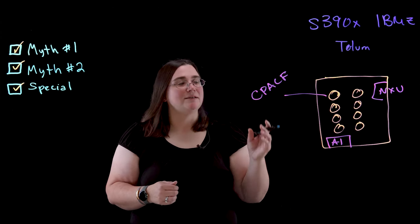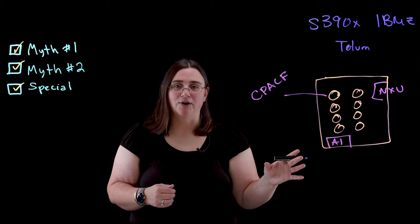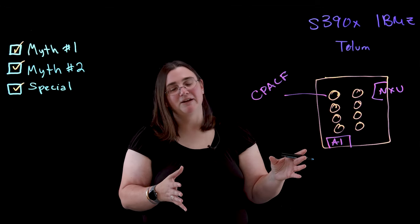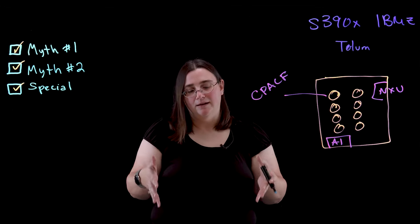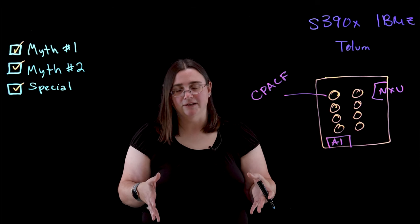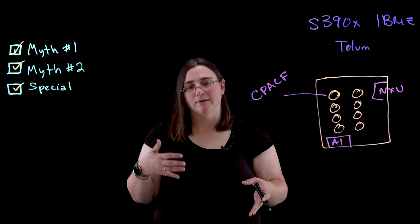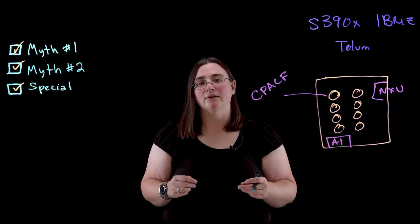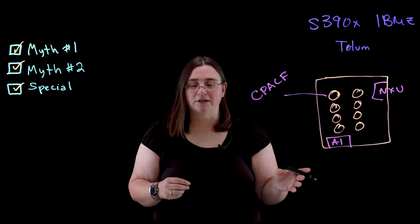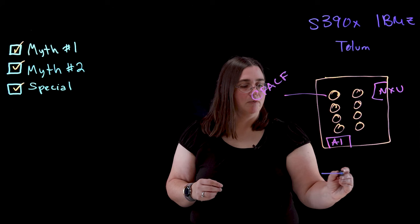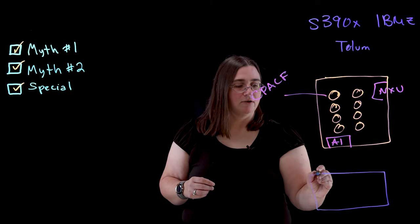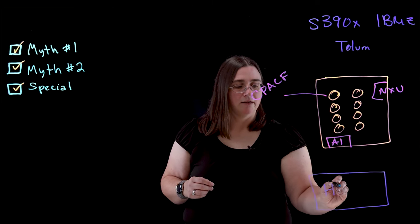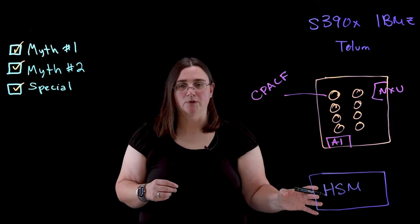I also wanted to mention something that is not on the CPU but is part of the rest of the system. So on a mainframe, you've got these big drawers full of cards that do various things. They connect the mainframe to the rest of the infrastructure in the data center, including storage and other networking devices. But one of the really important ones for us is that it includes this thing called a crypto express card. And the crypto express card is a hardware security module.